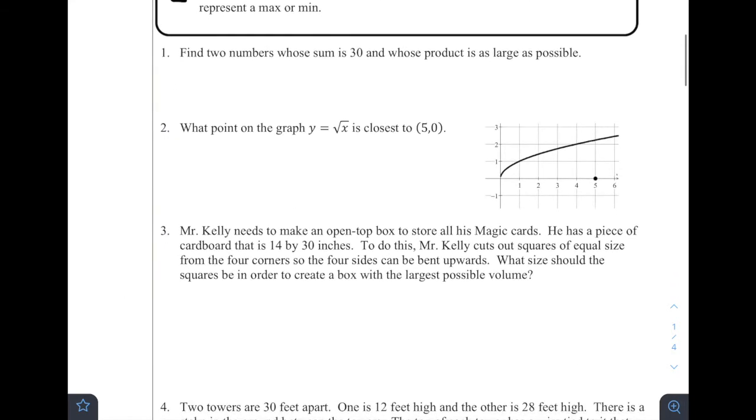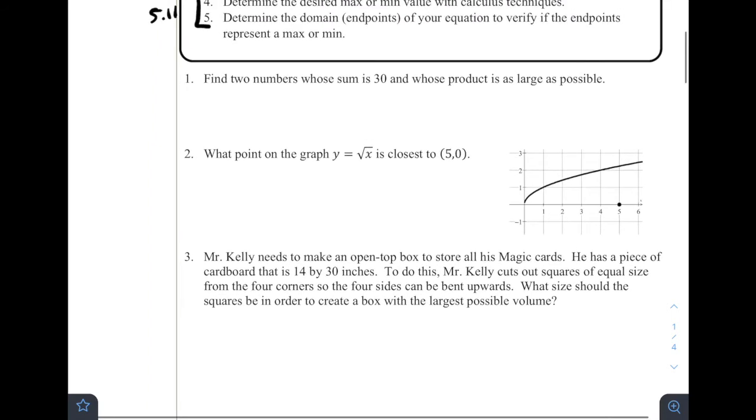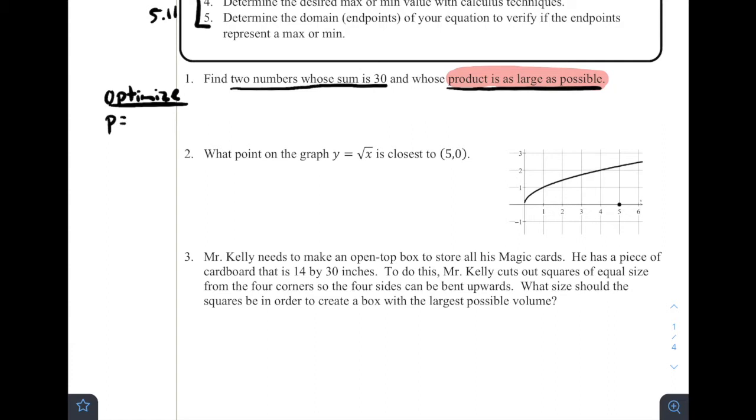So number one, find two numbers whose sum is 30 and whose product is as large as possible. So we have two sort of constraints, right? We've got two numbers whose sum is 30, but whose product is as large as possible. So the thing that we're trying to optimize, we want to optimize the product, right? That's what we want to be as large as possible, the product. So if we have two arbitrary numbers, we'll call that product, I'm going to call it P. P is going to equal the product of those two numbers. So X times Y, and this is what we want to optimize.